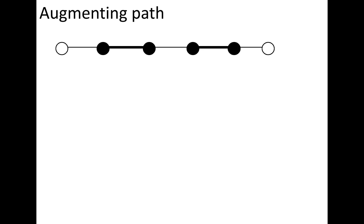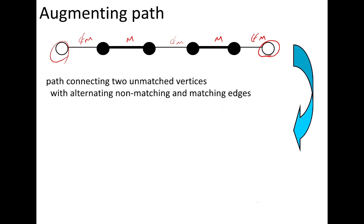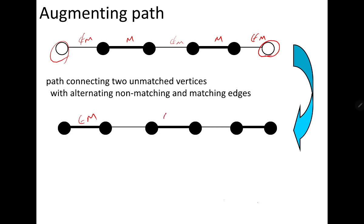In this example, we have an alternating path: edges alternate between not-in-M, in-M, not-in-M, in-M, not-in-M. It is also an augmenting path because it starts and ends at unmatched vertices. It is called augmenting because this path of odd length helps us increase the matching size: originally two edges, after alternating the path, now three edges belong to M.